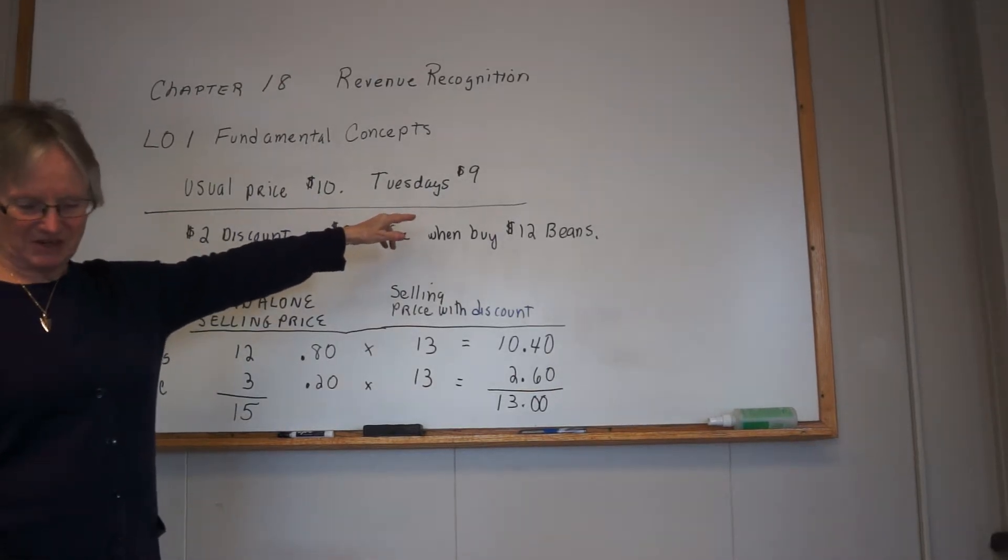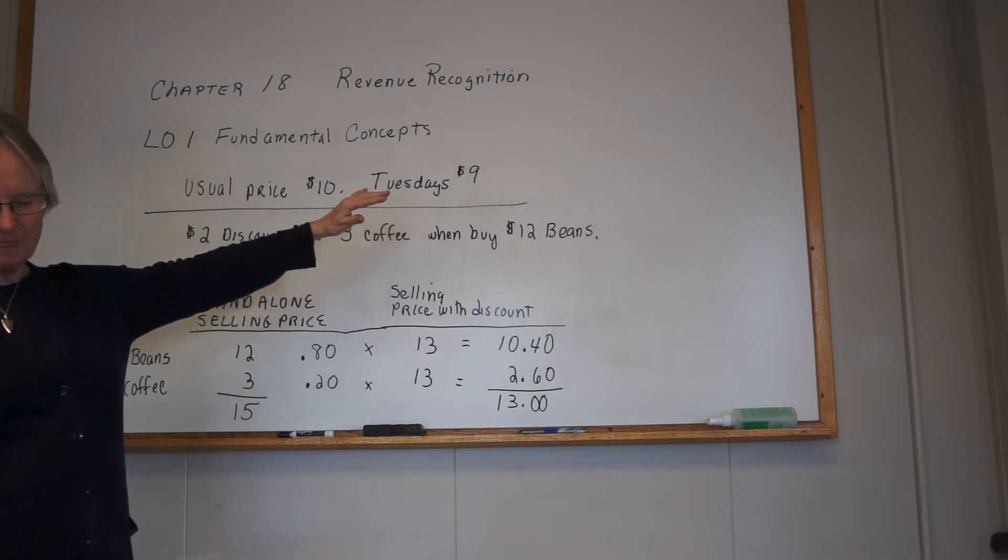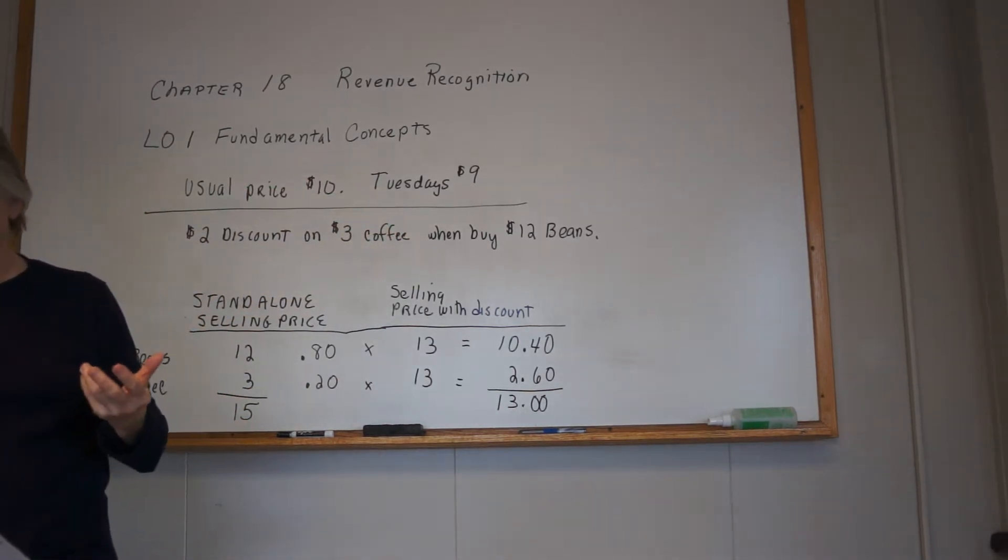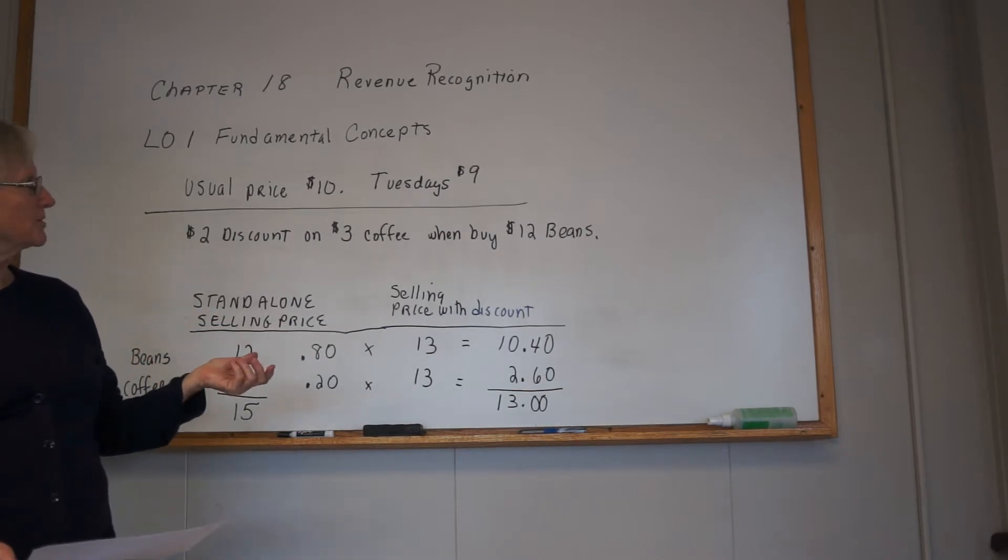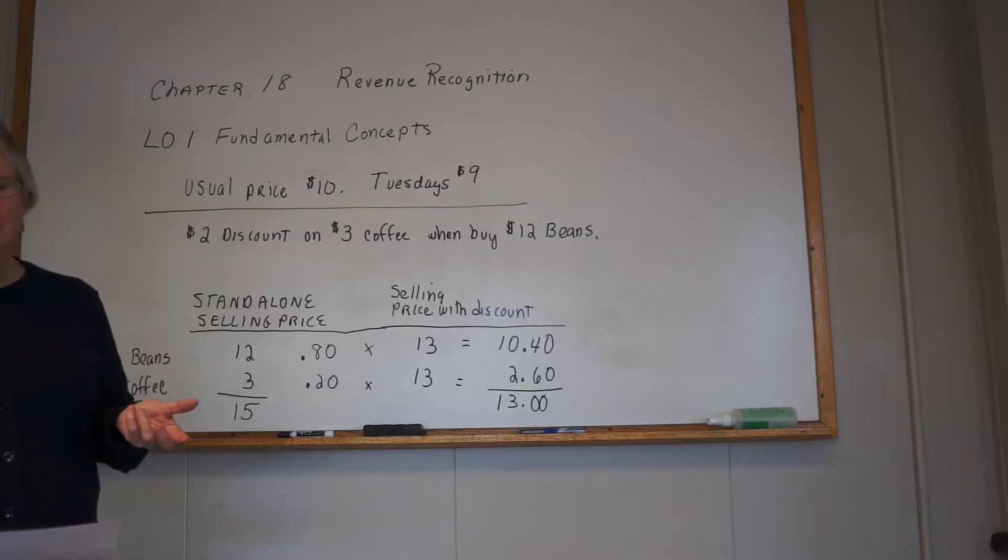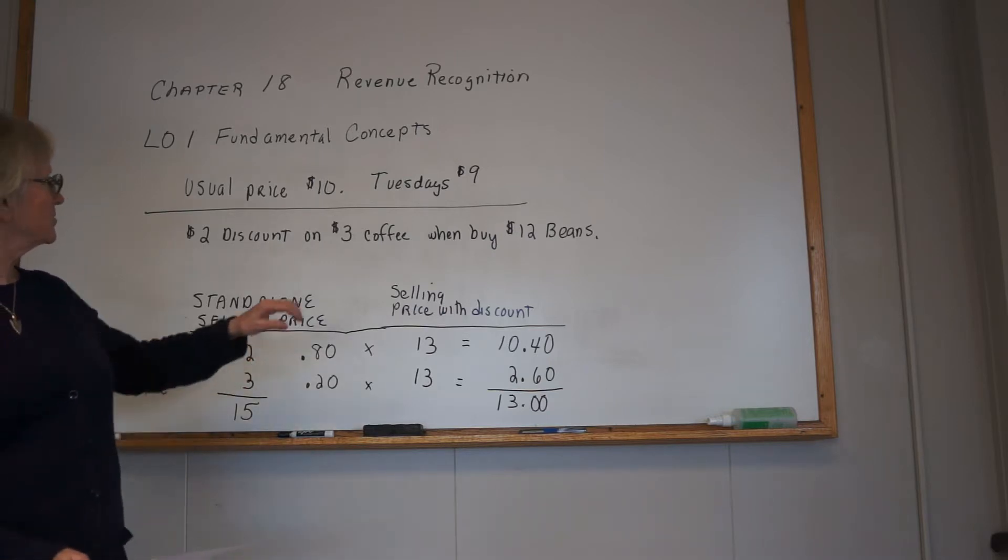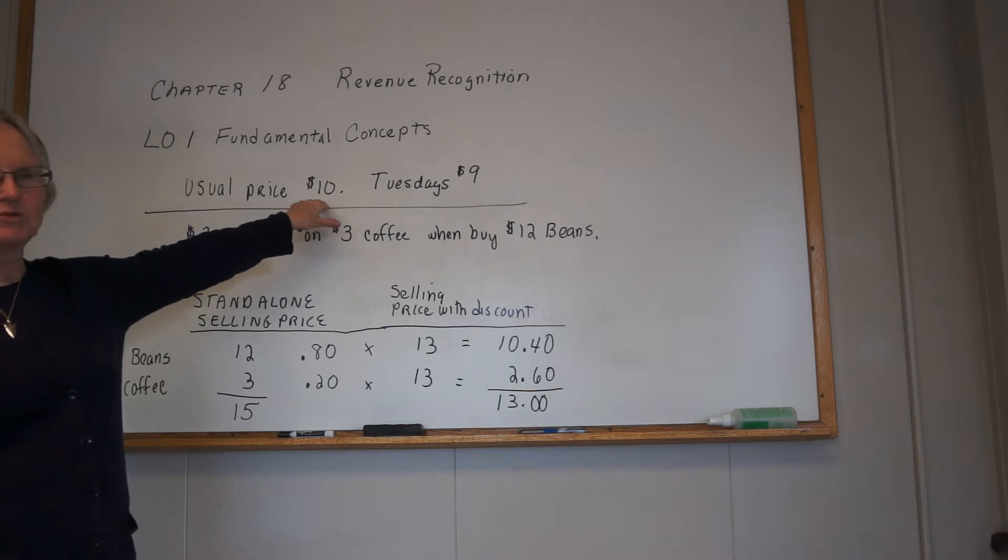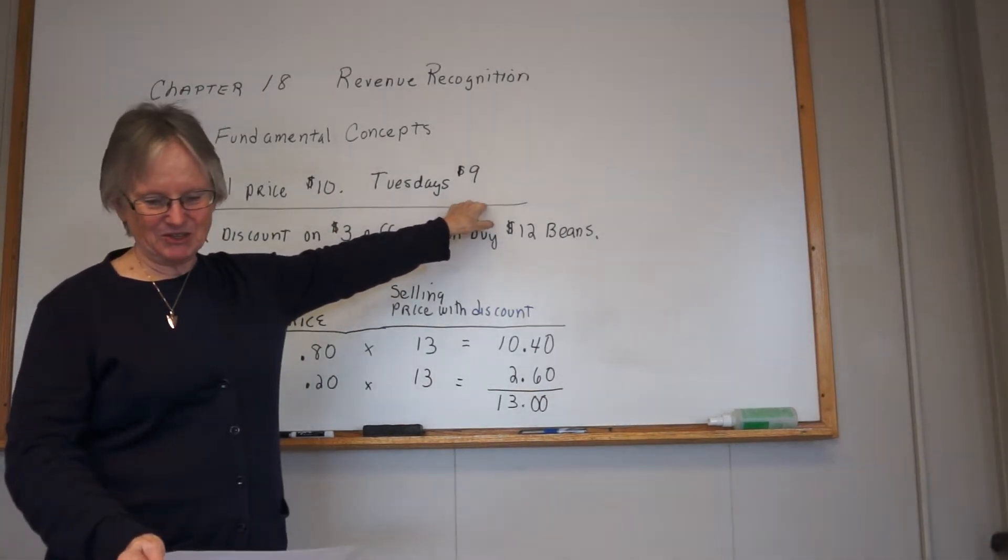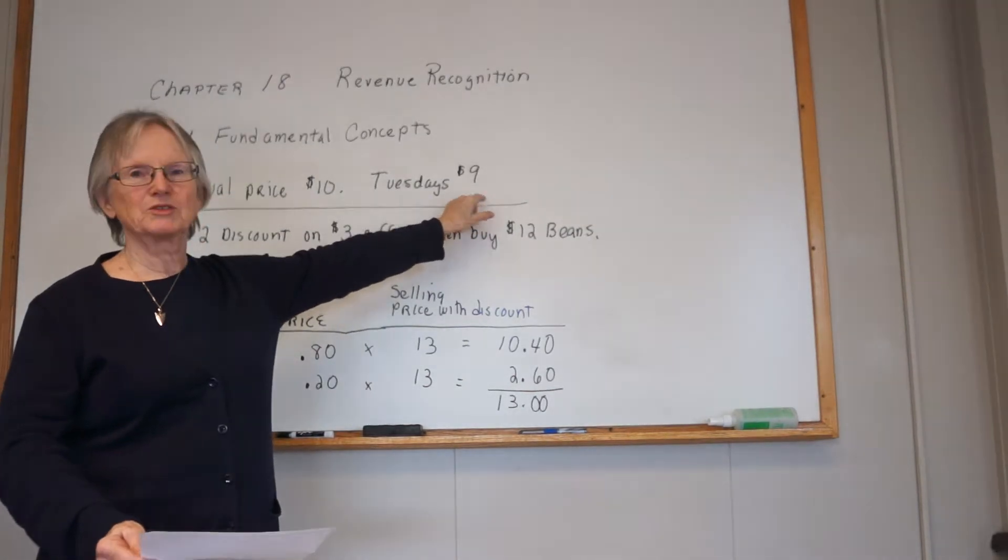There is a contract with the customer. There's only one performance obligation here - that's the bag of beans. To determine the transaction price, you have to think about the amount of money that you expect to receive in exchange for what you're giving up. So the transaction price, even though the usual one is $10, on Tuesday this is your transaction price - $9. That is what it's going to be determined by: what the company actually expects to receive when they sell the stuff.